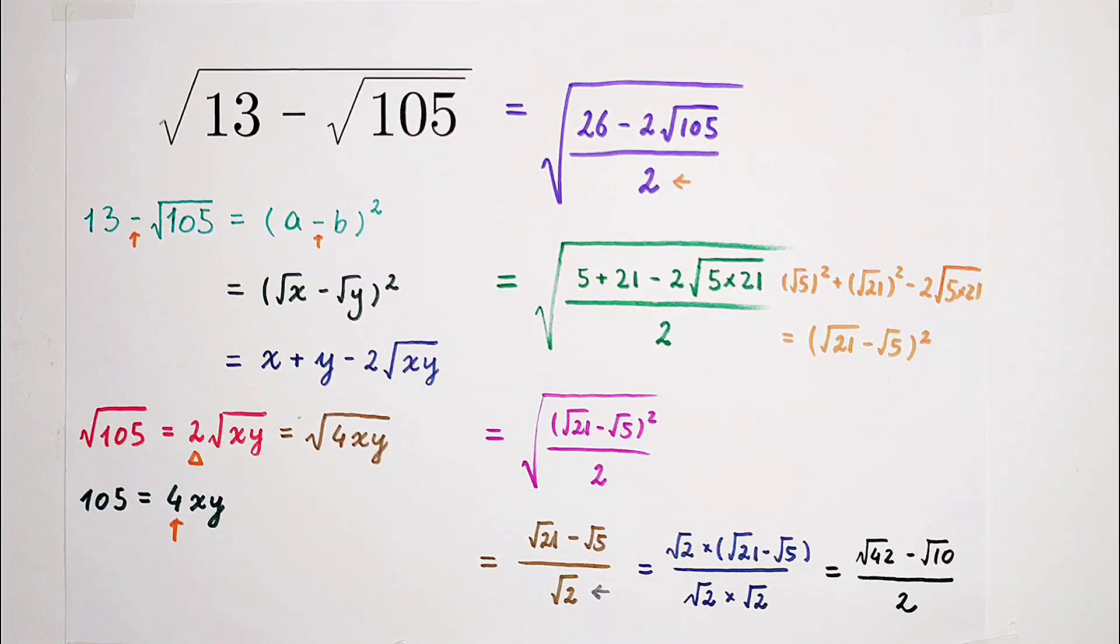The answer is square root of 42 minus square root of 10, over 2. Have you got it? And don't forget to give a thumbs up, subscribe to me for more videos, and we see you next time. Bye-bye.